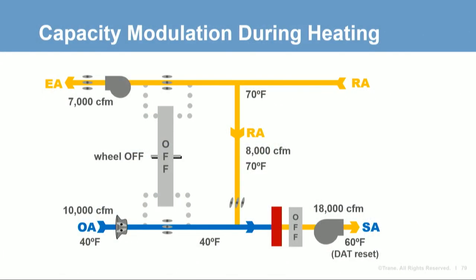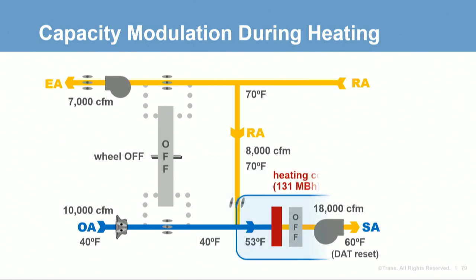If we turn the device off instead, with no heat recovery the mixed air temperature is 53 degrees, and the heating coil must activate to warm the air 7 degrees to the 60-degree set point — wasting new energy to heat the air. The right answer is to have some way to limit the capacity of the energy recovery device so it doesn't overheat the air. In this example with the wheel, the exhaust side bypass dampers are modulated partially open.